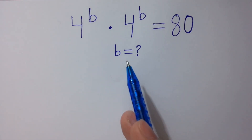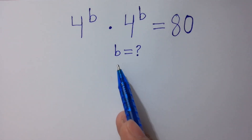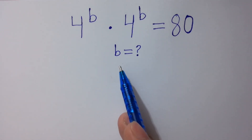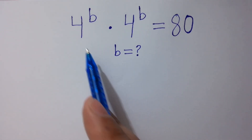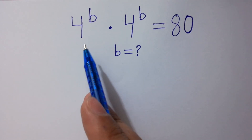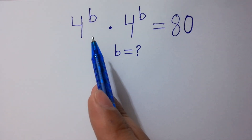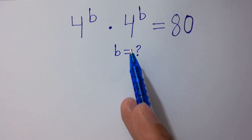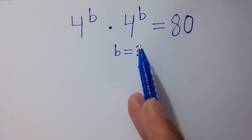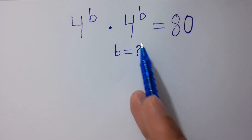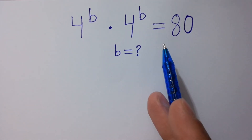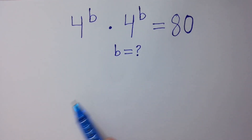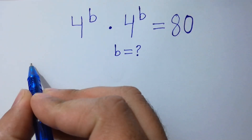Hello friends, find the value of B if 4 to the power B times 4 to the power B equals 80. Let's have a solution.